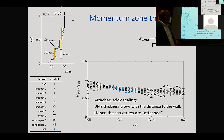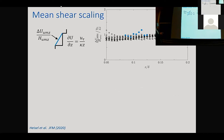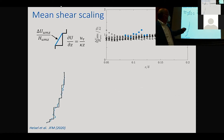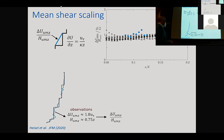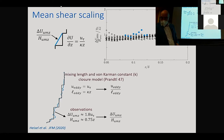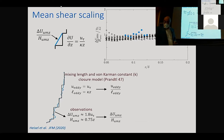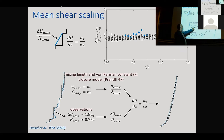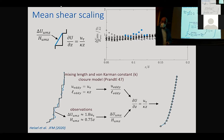These structures contribute correctly to the mean shear defined by the log law of the wall: the velocity jump scales with u_tau and the height goes with z. Comparing with mixing length theory and the von Kármán constant of 0.41, they are absolutely consistent. The physical meaning of the von Kármán constant comes from the scaling of the UMZ and its contribution to mean shear — whichever way we proceed, we recover the mean velocity profile.